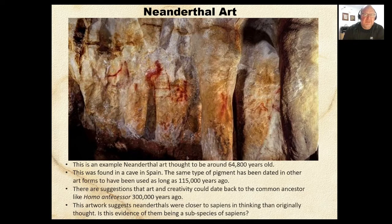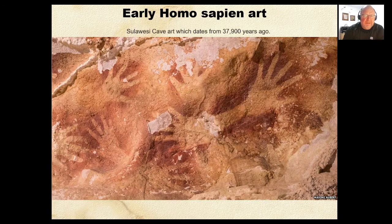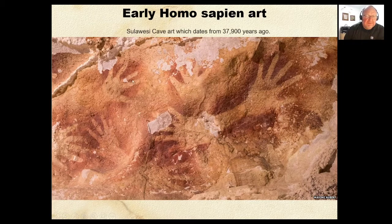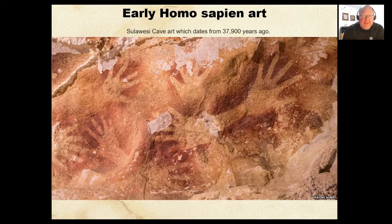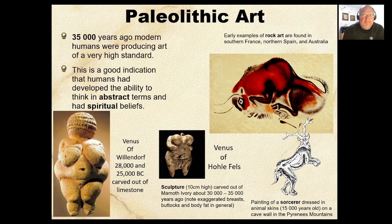Homo sapiens eventually took over. Here are early examples from Sulawesi caves, about 38,000 years ago — essentially the first graffiti. Importantly, when you look at these handprints, note the length of the thumb versus the ring finger — showing they had both a precision grip and a power grip, demonstrating how biologically we had advanced, enabling greater brain development and ultimately art.